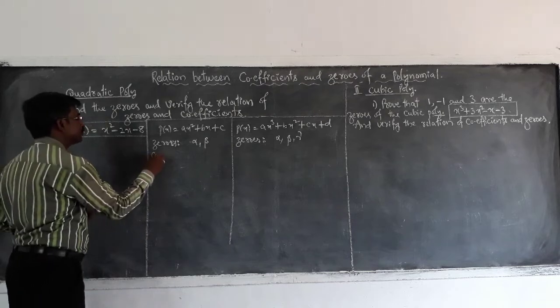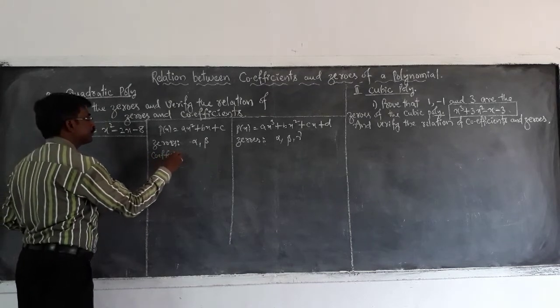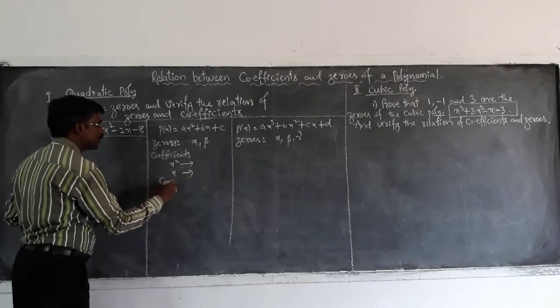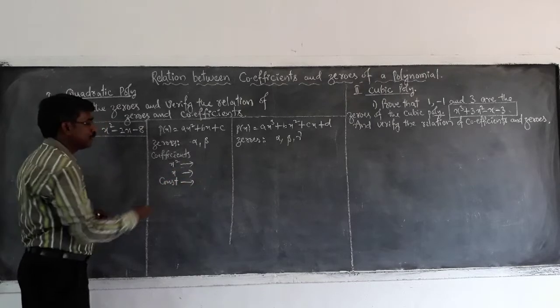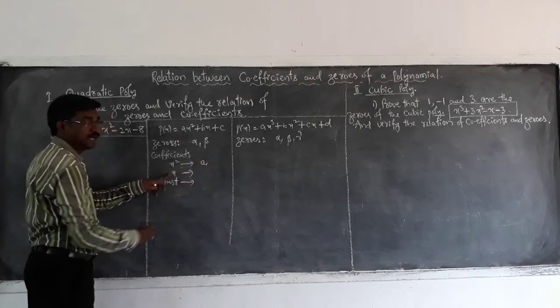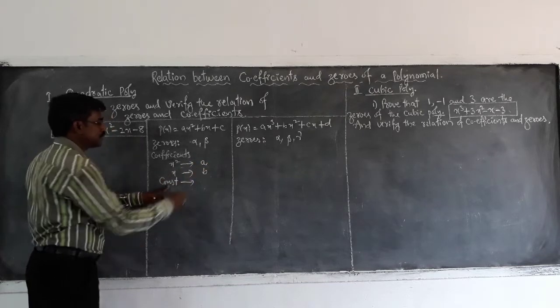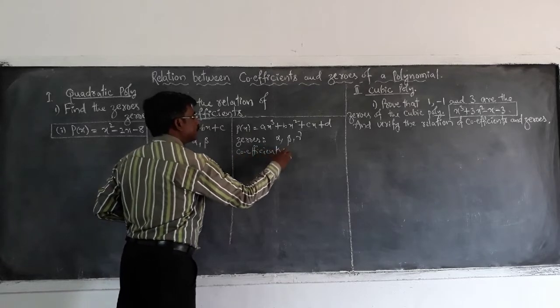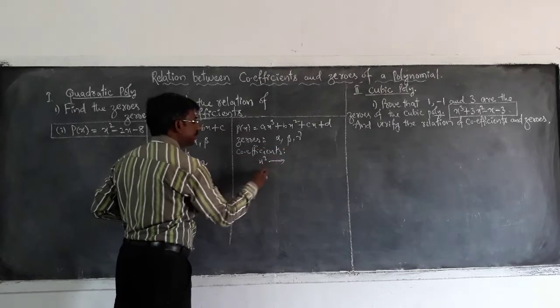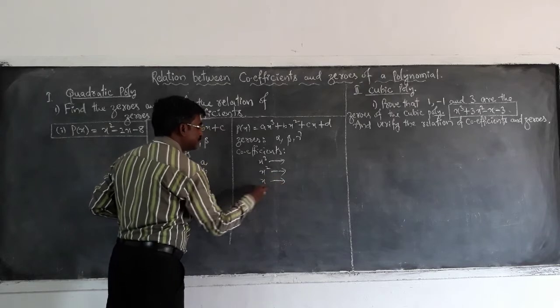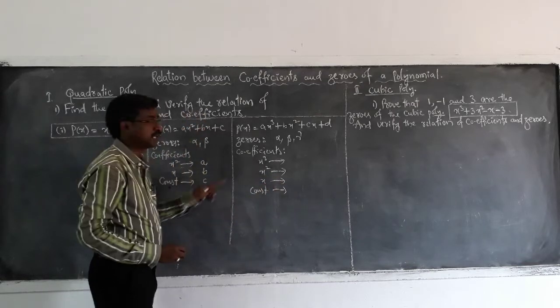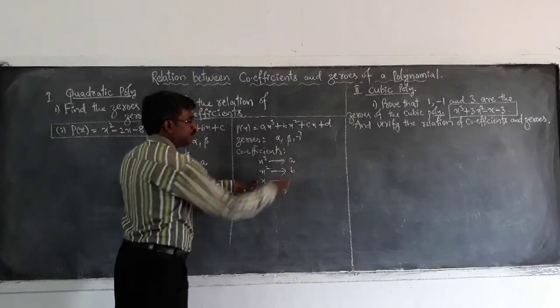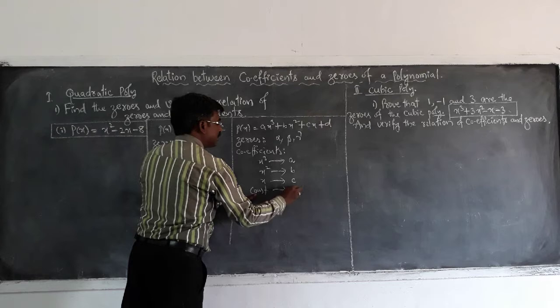And what are the coefficients? So here the coefficient of x square and the coefficient of x and the constant term. Here the coefficient of x square is a and x is b and the constant term is c. Similarly here, x cube coefficient is a, next b, next c and finally d.